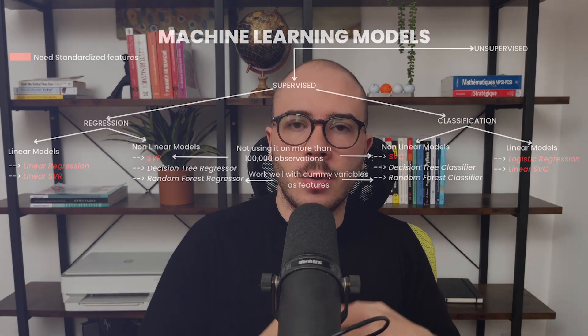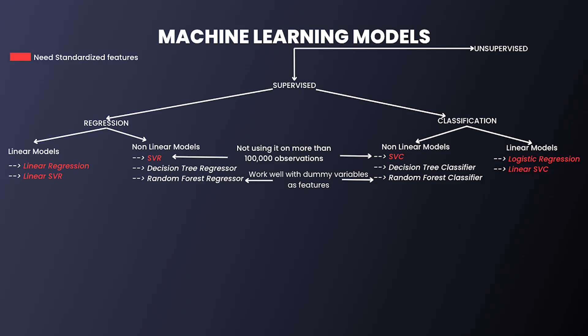If you have too much data, it's better to use a random forest, which uses an iterative process and is not impacted as much by the number of data points. Moreover, if your dataset has a lot of dummy variables — zeros and ones — you can also use a random forest, because its tree-building iteration process handles dummy variables without negatively impacting training. That's a very interesting point.